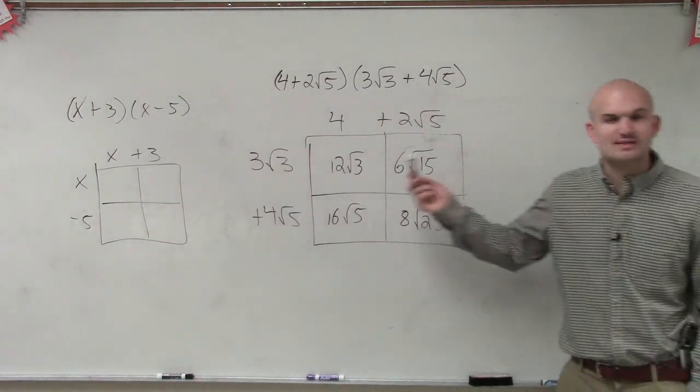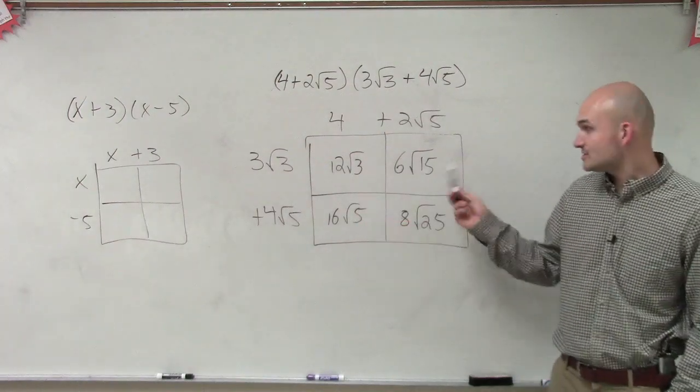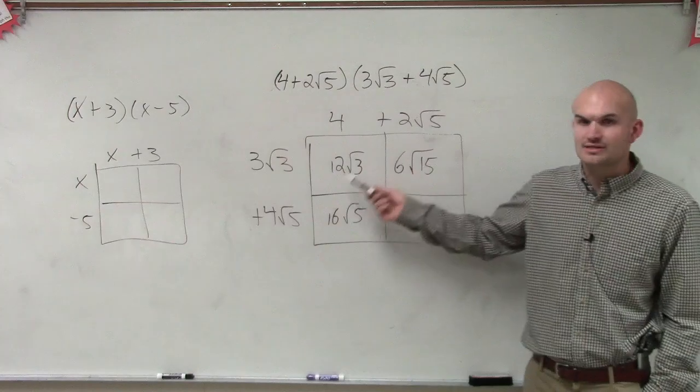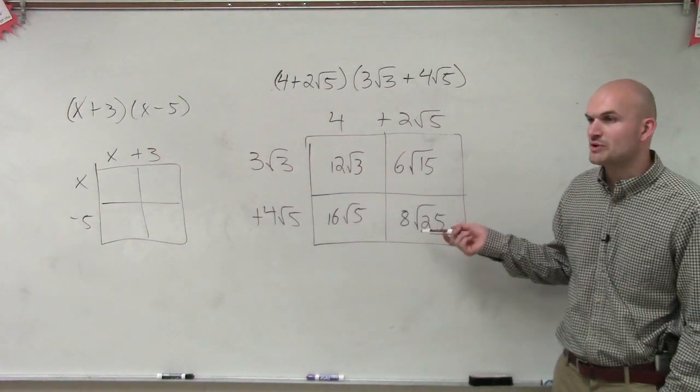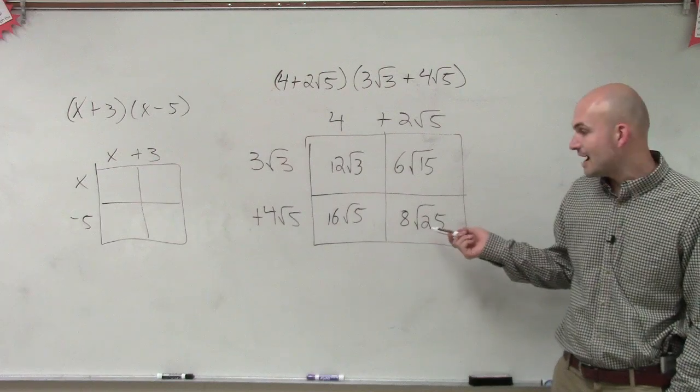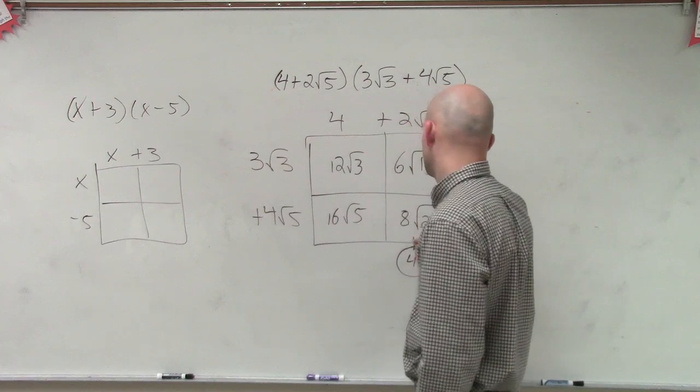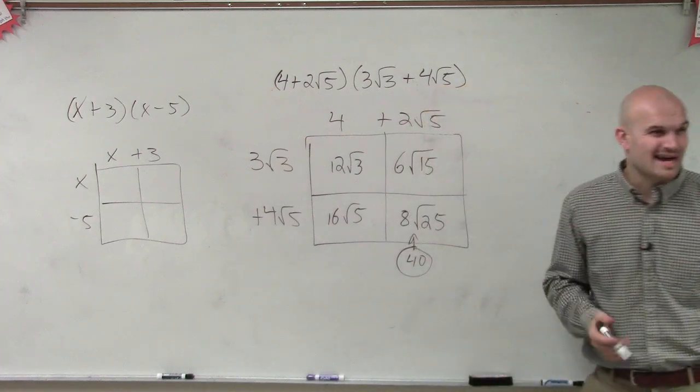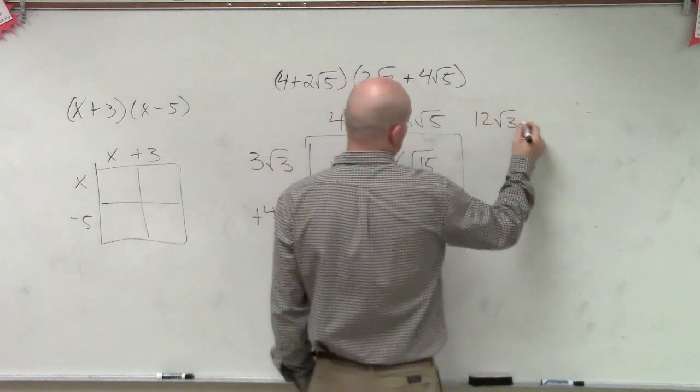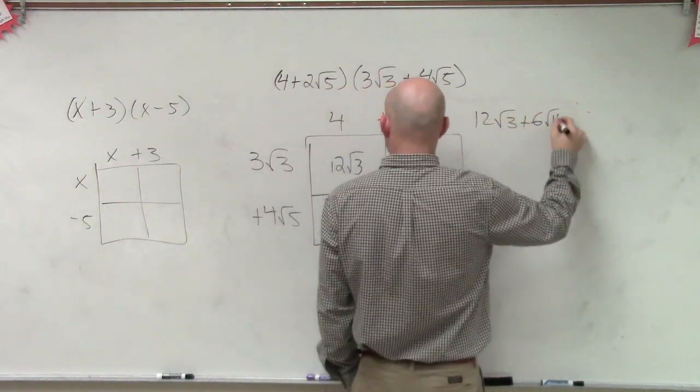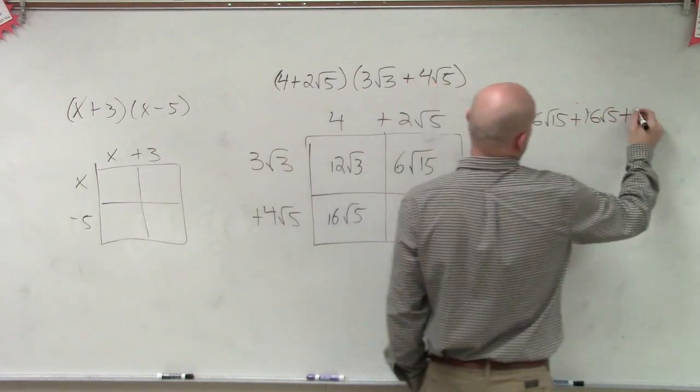Now, if you guys remember, we always said those ones that had the same variable factors. Do any of these have the same factors? No. So we can't combine them. The only thing we can do is simplify √25, which you know is 5. And then 5 times 8 is 40. So now we just write out the problem: 12√3 + 6√15 + 16√5 + 40.